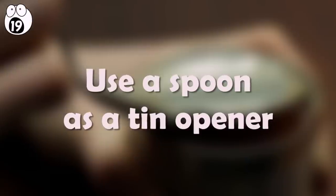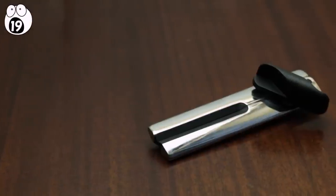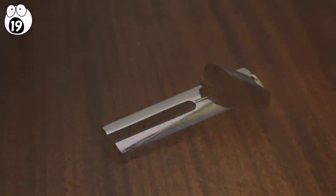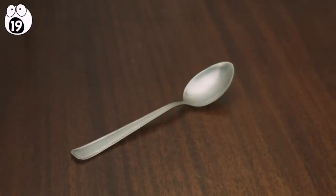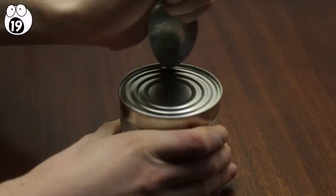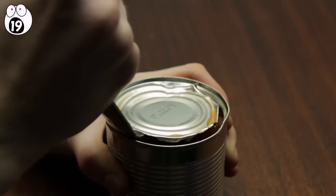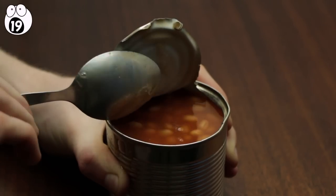Number 19. Use a spoon as a tin opener. Tin openers are one of those items that you only realize how precious they are when you can't find one. If you find yourself in this predicament, there is a solution. You can use a spoon. Place the tin on a flat surface and use the tip of the spoon like a saw and simply saw your way around the edges. Once the top is off, you can also use the spoon to lift the lid off.